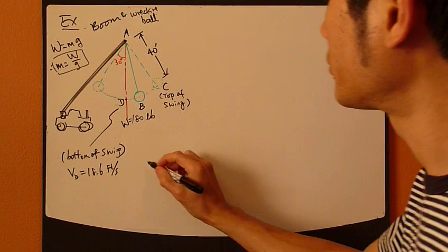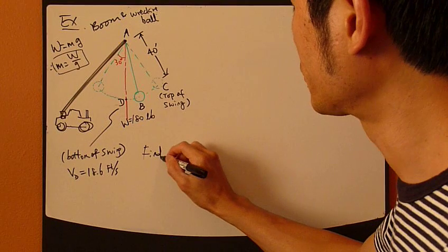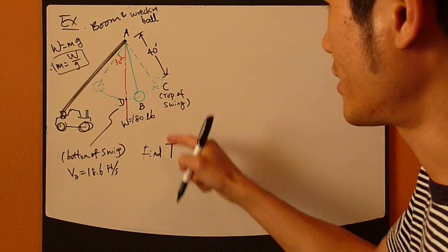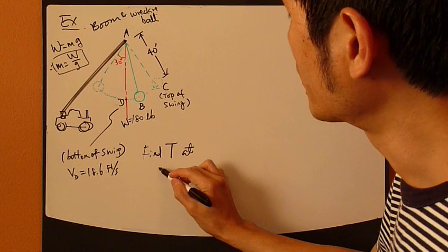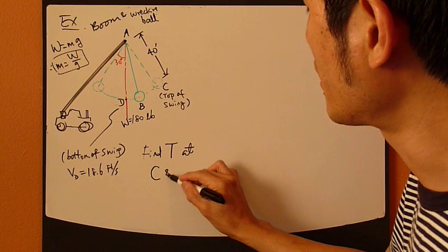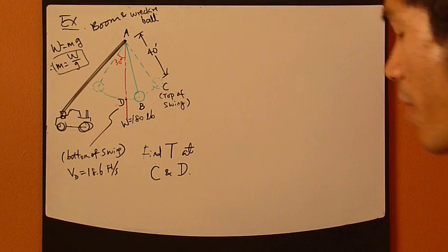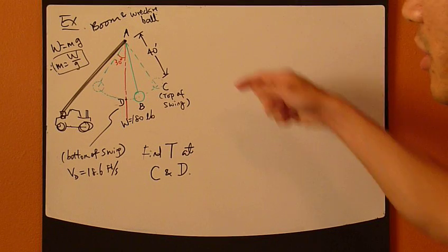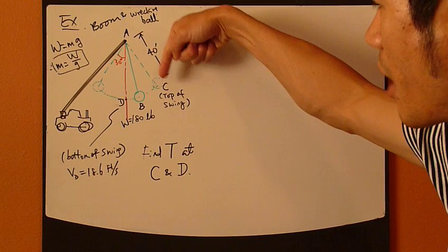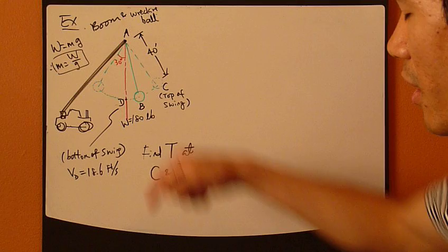You're asked to find tension T inside this rope at the top of the swing C and bottom of the swing D. So find tension. And you should expect the tension to be different at the top of the swing and the bottom of the swing.